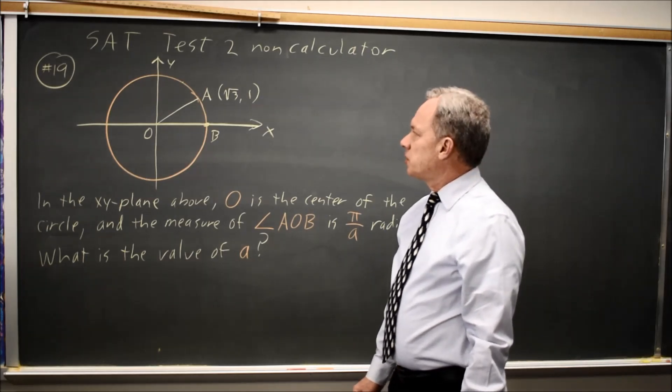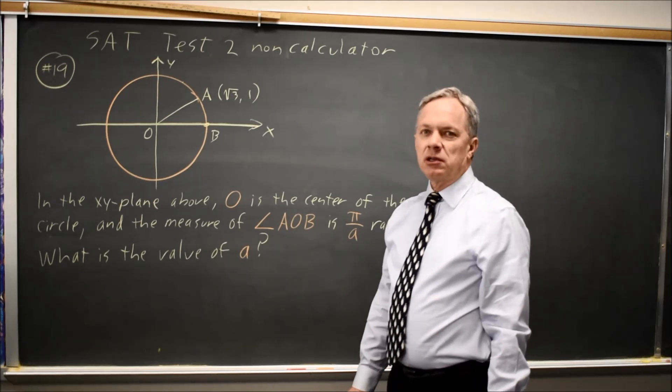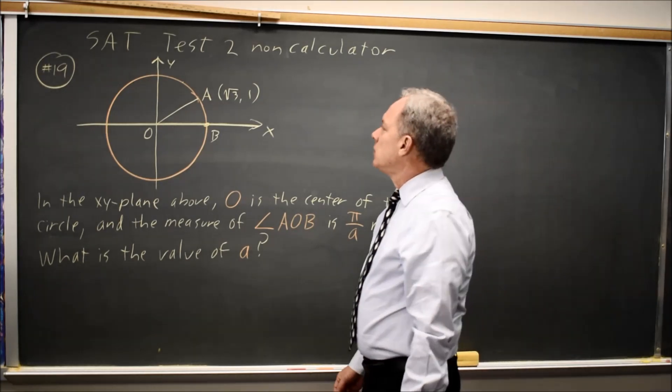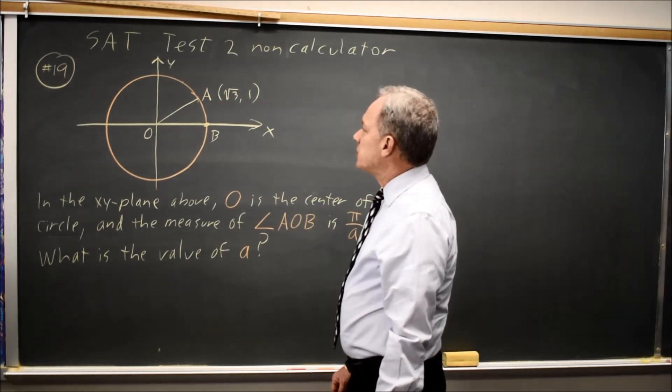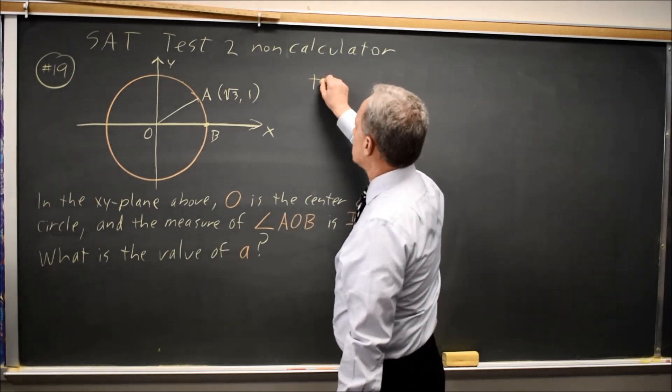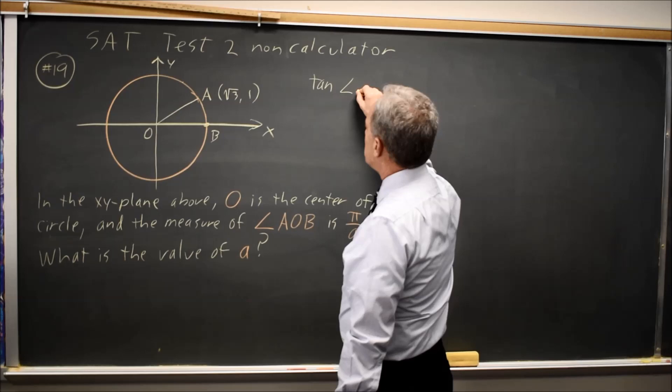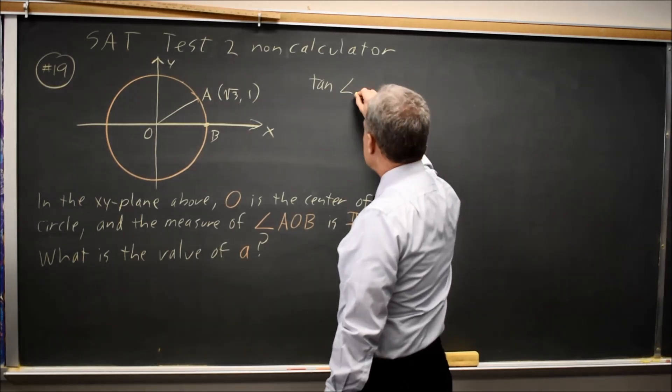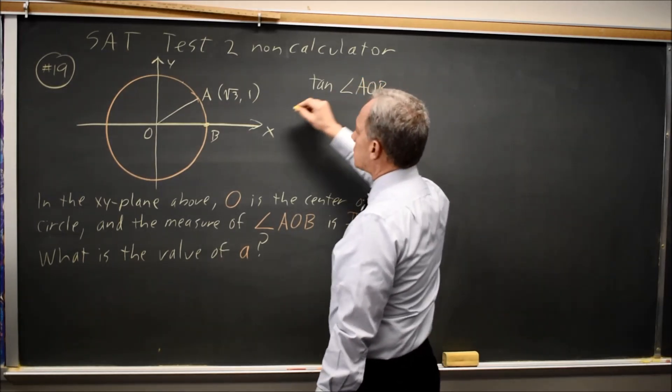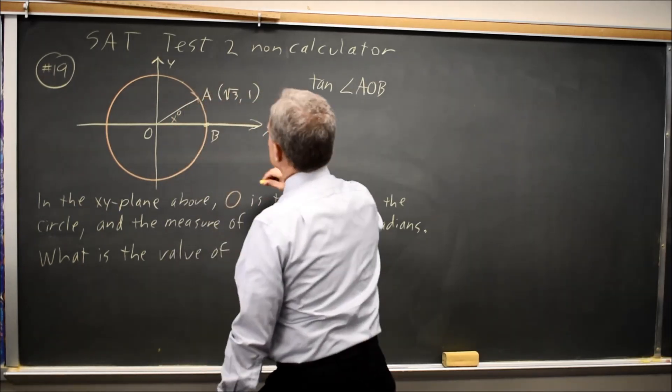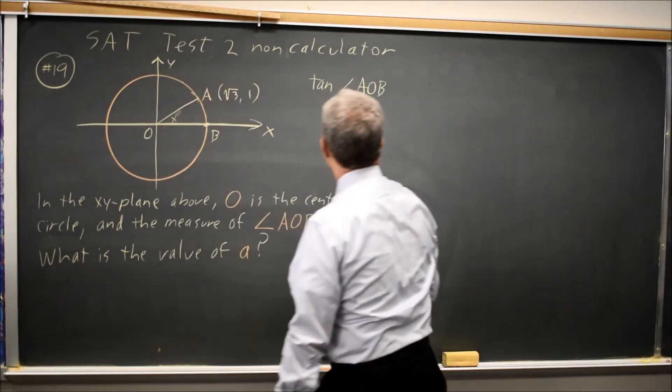In this case, with the coordinates of A being root 3, 1, one thing we can do is say that the tangent of angle AOB, which is awkward, so I'm going to call that X, without a degree symbol.